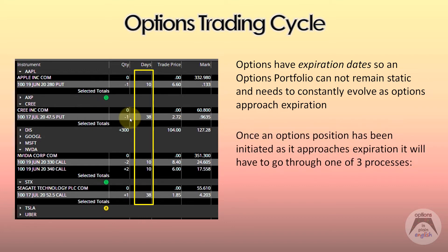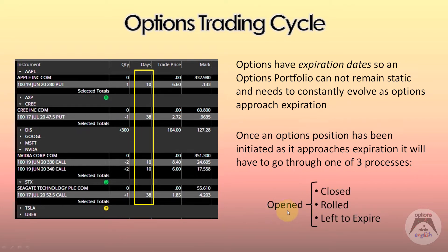Once an options position has been initiated, as it approaches expiration, it'll have to go through one of three processes. Once it's open, you're either going to have to close it, you're going to have to roll it to the next month or to the next expiration, or you're going to leave it to expire. You have to do something to them and it's got to be one of these three things.